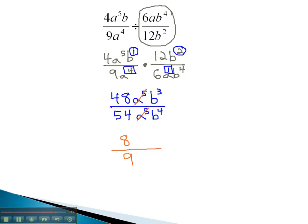On the b's, we subtract the exponents 3 minus 4 to get negative 1. Because it is negative, that tells us the b to the 1st must move to the denominator, and we do not need to write the 1st power. Our final answer is 8 over 9b.